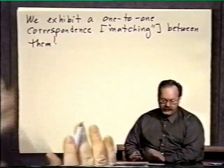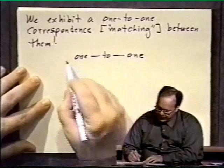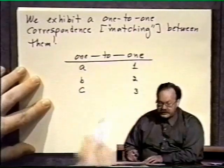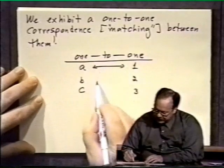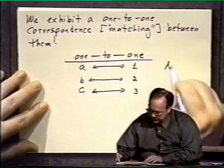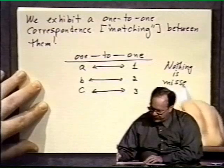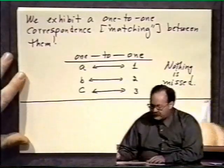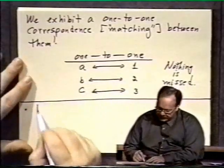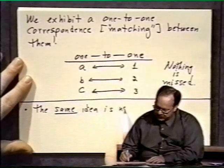And this is what I mean by counting, and this is how it works. We list on one side a, b, c, and over here the elements of the other set, 1, 2, and 3, and here is the matching. Suppose a is matched with 1, b with 2, and c with 3 — nothing is missed. That is the point. And so by that simple argument, that's how we know that two sets have the same number of elements: there is a correspondence we can make between them.